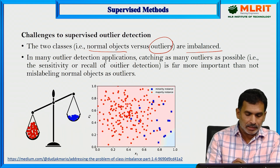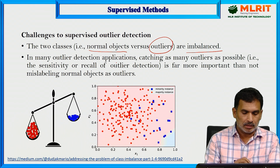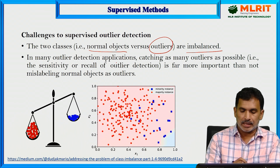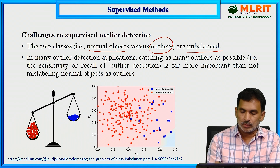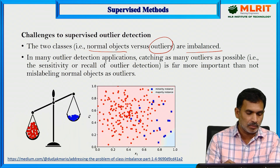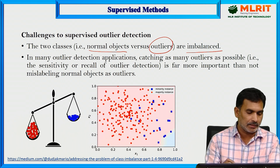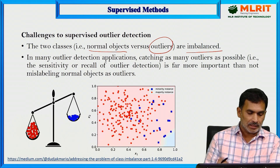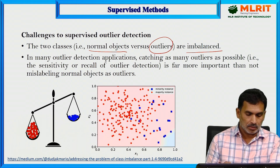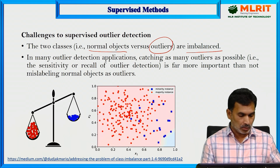In many outlier detection applications, catching as many outliers as possible — that is, the sensitivity or recall of outlier detection — is far more important than mislabeling normal objects as outliers.